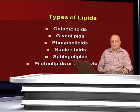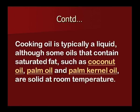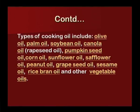Plant lipids contribute toward oilseed crops. Among edible cooking oils — plant, animal, or synthetic fats used for frying, baking, and other types of cooking — they are also used in food preparation and flavoring not involving heat, such as salad dressings and bread dips. Some oils containing saturated fat, such as coconut oil, palm oil, and palm kernel oil, are solid at room temperature. Types of cooking oil include olive oil, palm oil, soybean oil, canola oil, rapeseed oil, pumpkin seed oil, corn oil, sunflower oil, safflower oil, peanut oil, grapeseed oil, sesame oil, rice bran oil, and other vegetable oils.